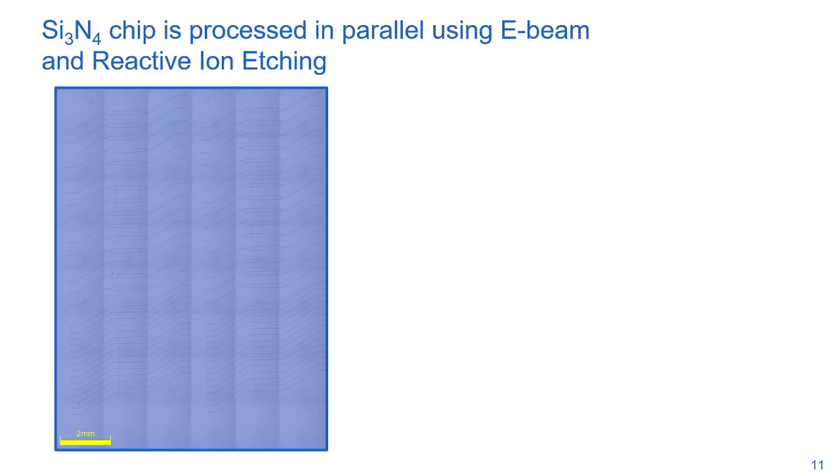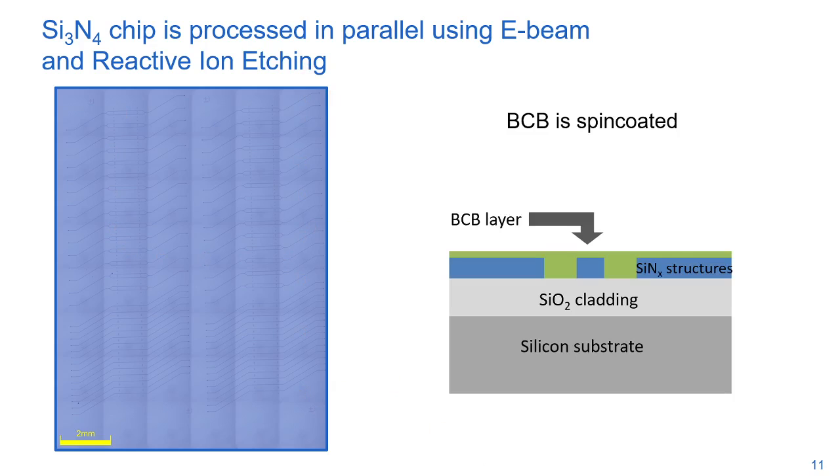A silicon nitride chip is processed in parallel but completely separate using electron beam and reactive ion etching. This particular chip contained a variety of waveguide structures and Mach-Zehnder interferometer structures with grating couplers for vertical coupling. Before transfer printing, a thin layer of BCB is spin-coated on top.